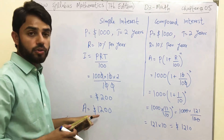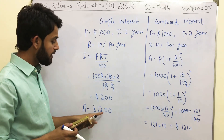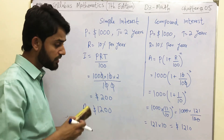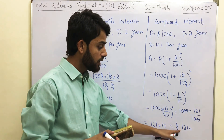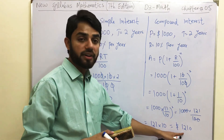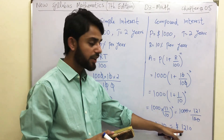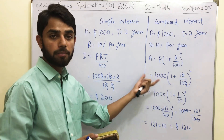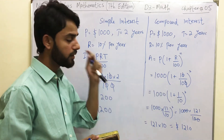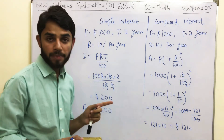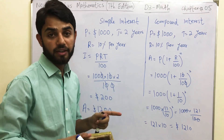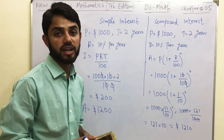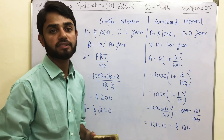So you can see that with simple interest you got $1200 at the end of two years, while with compound interest you are getting $1210. The extra $10 comes from compound interest being profit on profit. If you found this video helpful, please don't forget to subscribe and share it with as many students as you can — it might help them learn.